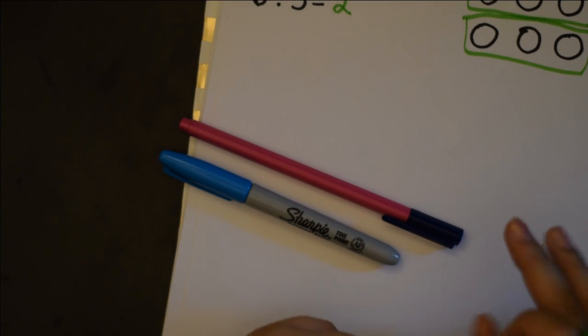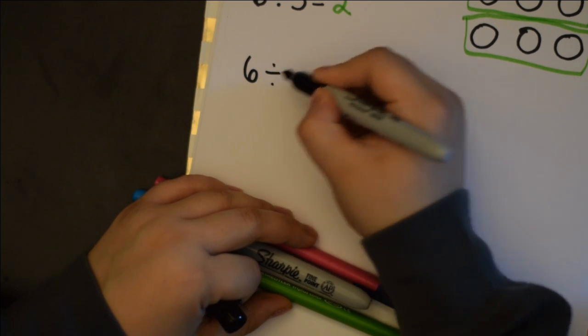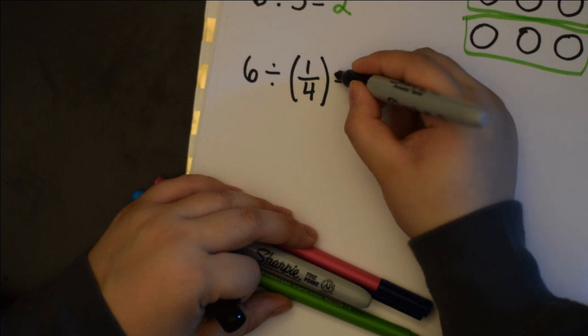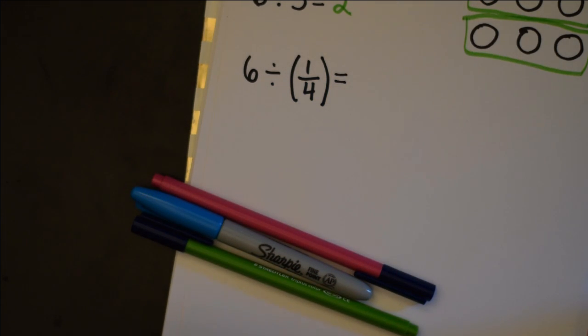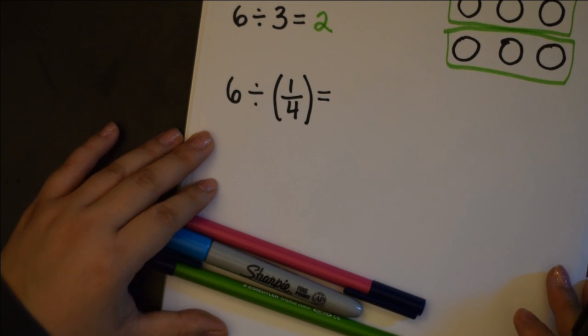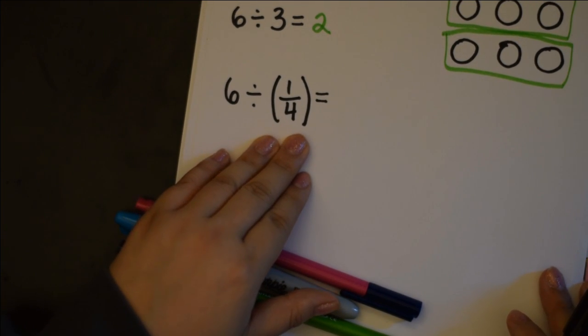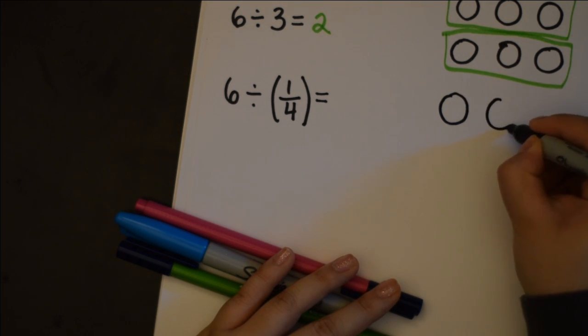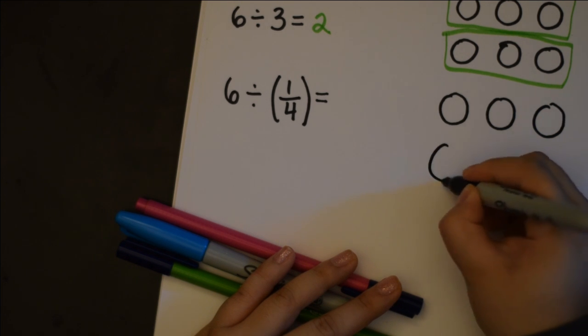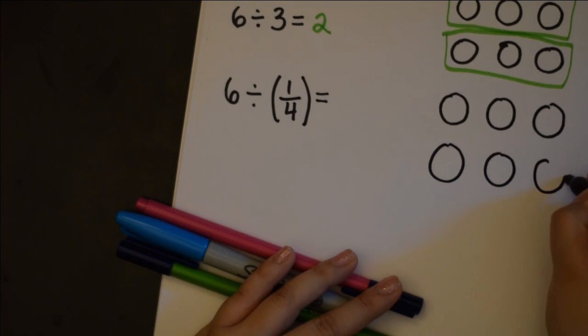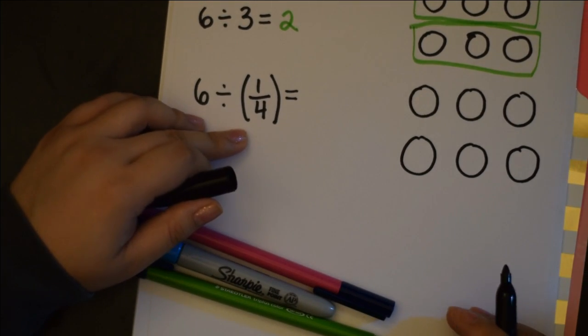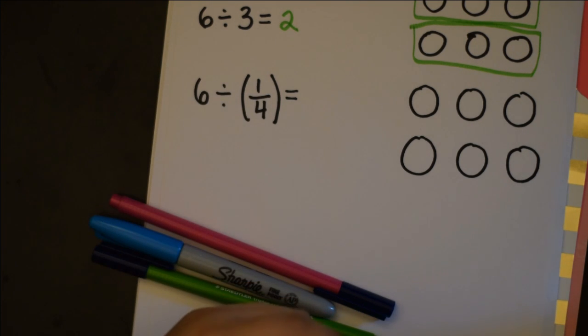So where it gets a little bit strange is if we did something like six divided by one fourth. And this is what I wanted to sort of build a little bit intuition about because instead of just giving you a rule right off the bat, because you could just look that up yourself. But if I did six divided by one fourth, you can kind of think of it the same way. I'm going to break up my six things into groups of something. Before it was groups of three, but now it's like, what does it mean to break it into groups of one fourth? What does one fourth mean?